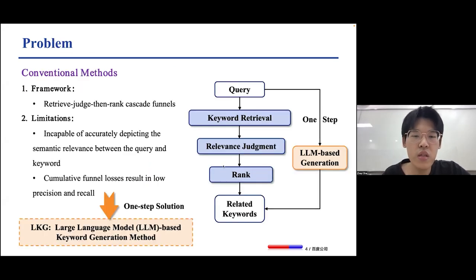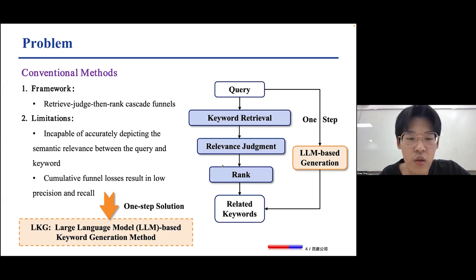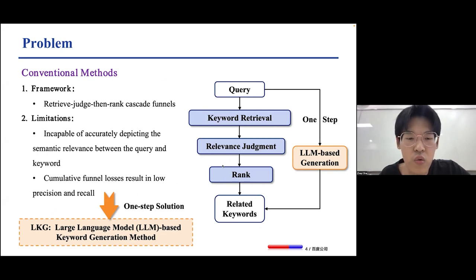Conventional technical solutions adopt the retrieve-judge-then-rerank retrieval framework structure in cascade pipelines. However, it has limitations in accurately depicting the semantic relevance between the query and keyword, and the cumulative error loss results in unsatisfactory precision and recall.